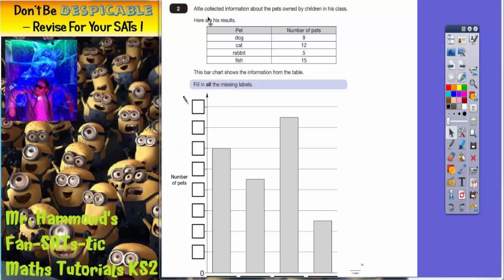Question 2: Alfie collected information about the pets owned by children in his class. Here are his results. We've got nine people had dogs, twelve people had cats, five people had rabbits, fifteen people had fish. This bar chart shows you the information from the table.